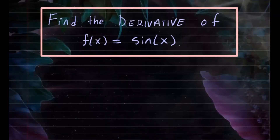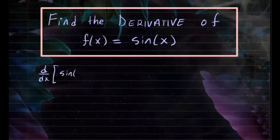Let's go ahead and find the derivative of this trigonometric function, sine of x. So we want to know what is the derivative of sine of x. We probably know that this is cosine of x, and we're going to derive that by using the limit definition.